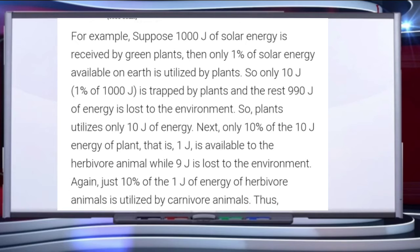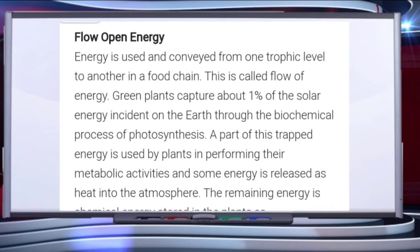One important thing to understand here: when solar energy is given to plants for photosynthesis, plants convert only 1 percent of the total energy falling on them into chemical energy. But in all other trophic levels of a food chain, the 10 percent law is followed.